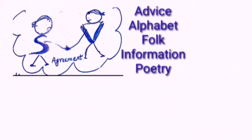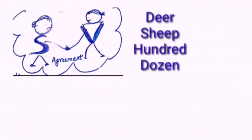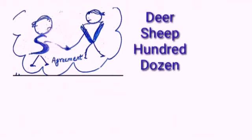Some nouns have the same form for plural as the singular. For example, deer, sheep, hundred, dozen. Let's see an example in sentence. Ten hundred make one thousand.